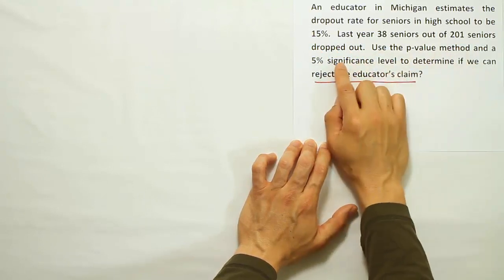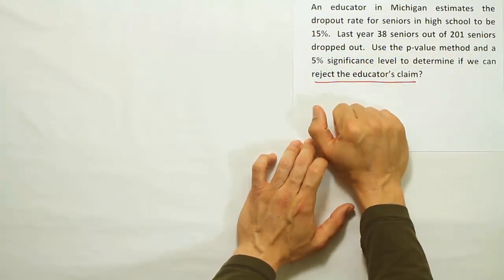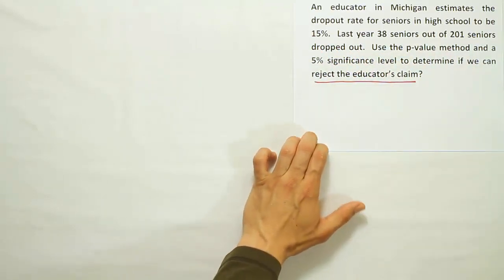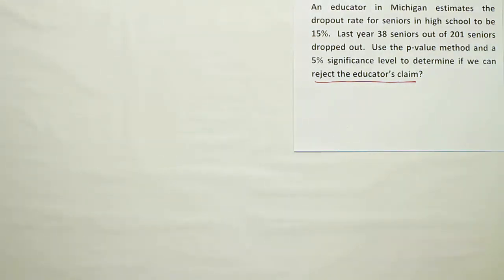And then we notice that there's no mention of the mean and no mention of the standard deviation in the problem. Those are two things we would certainly need if we were doing a hypothesis test about the mean. So, let's assume that it's a problem that relates to the proportion or deals with the proportion.